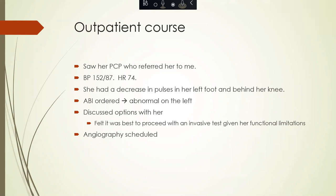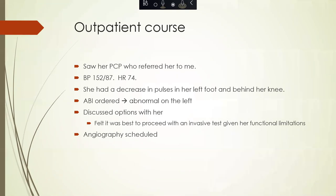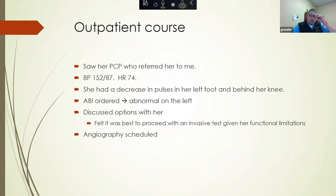Her blood pressure was 152 over 87, which is elevated, and her heart rate was 74. On exam, she had decreased pulses, namely in her left foot and behind her left knee. An ABI was ordered, which was abnormal in the left leg. After discussing many options with her, given the functional limitations in her daily life, it was felt best to proceed with an invasive test, so we scheduled the angiography.